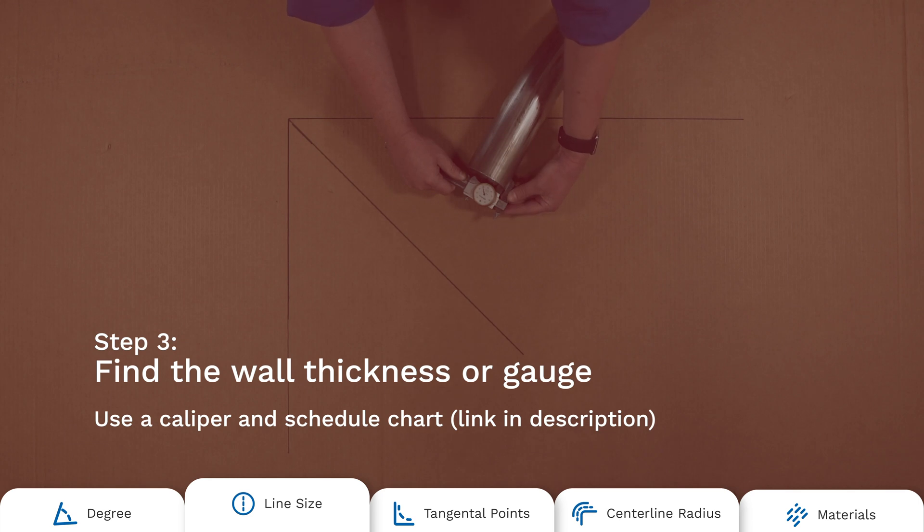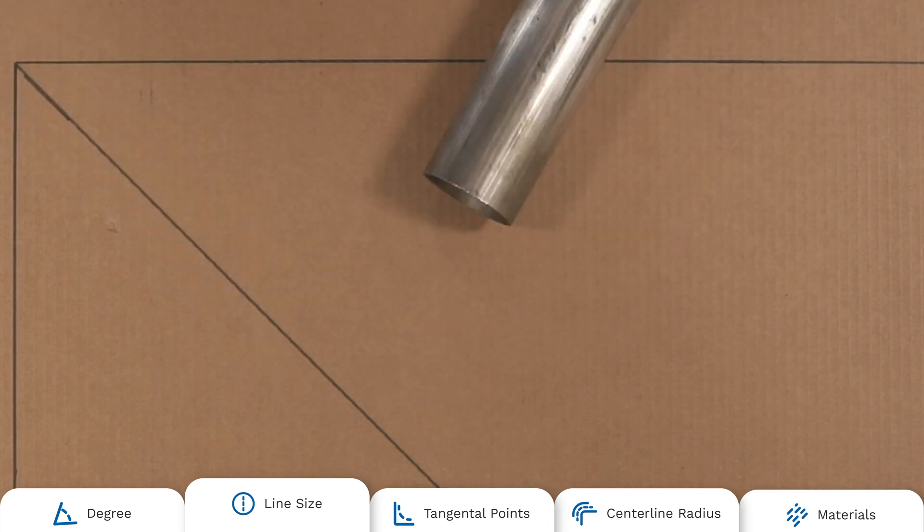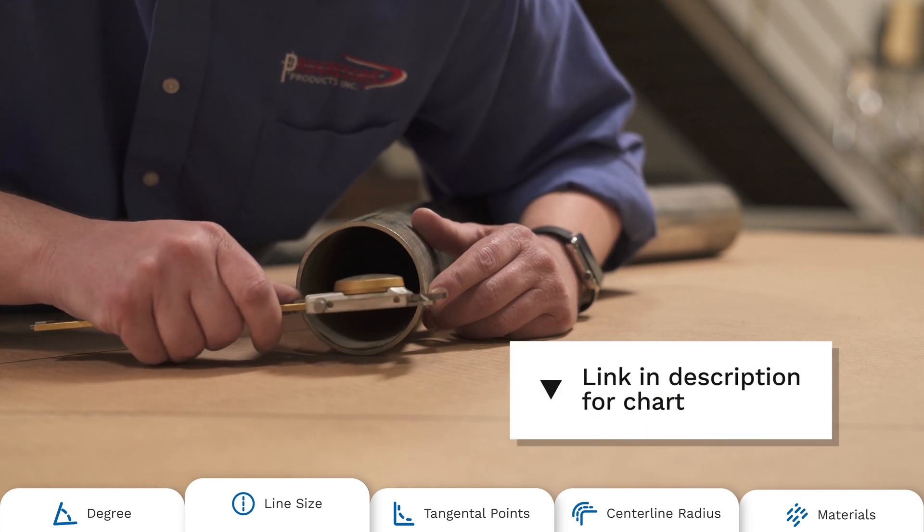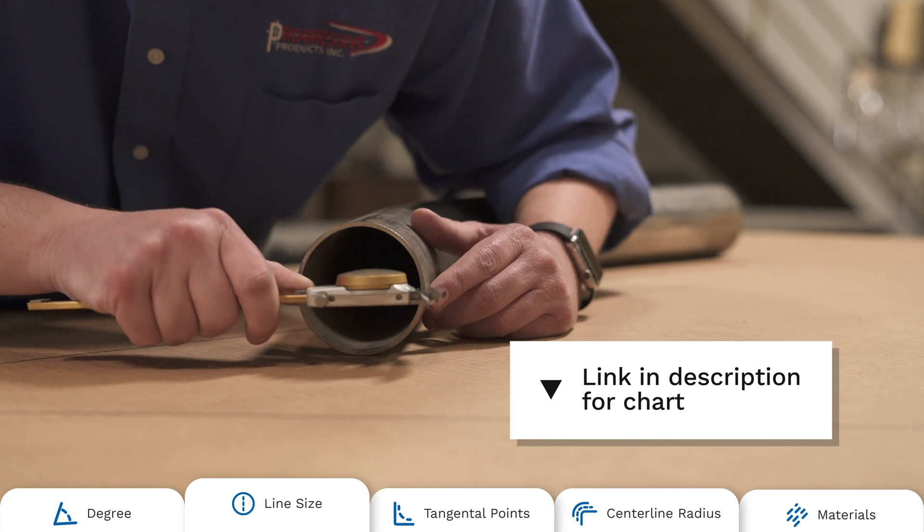Next, find the gauge or schedule, also called wall thickness of the pipe, using a caliper. If you're still unsure whether you've got a pipe or tube, as sometimes happens, we recommend using an ID or OD chart for confirmation. There's a link to a chart in the video description below.